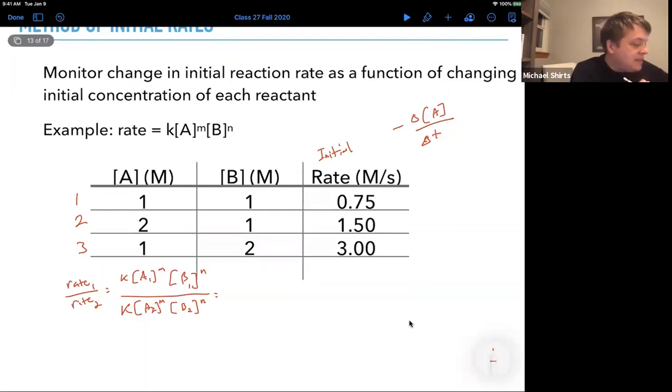So now we start plugging in numbers. Let's look at experiment one and two. Well, one thing we can notice is the rate constants cancel out. So we've eliminated one equation. So we can rewrite this as A1 over A2 to the m times B1 over B2 to the n. So in experiment one and two, A1 is one and A2 is two, but the B is the same in both experiments. So we can cancel this out and that gives us one over two to the m. And now we only have one variable left.